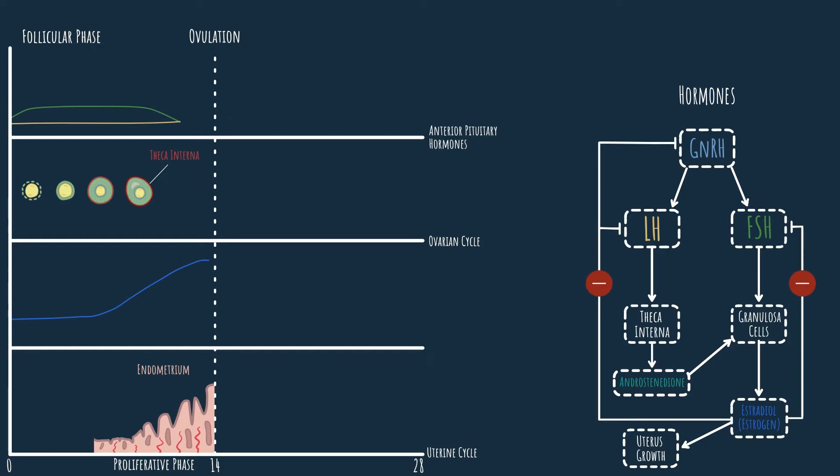We can see it here on the graph. It inhibits them by acting on the hypothalamus and inhibiting the GnRH secretion. Remember that GnRH is the hormone that is needed for FSH and LH secretion. On top of inhibiting GnRH secretion, estradiol also acts on the anterior pituitary and directly inhibits the secretion of FSH and LH.